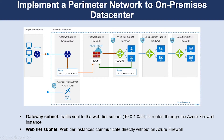This is a reference architecture which shows a hybrid network that extends an on-premises network to Azure. The architecture implements a perimeter network between the on-premises network and an Azure virtual network. All inbound and outbound traffic passes through the Azure Firewall.